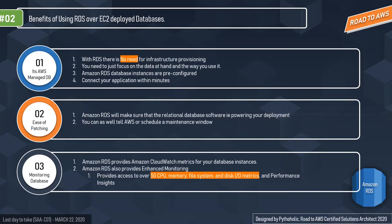The second benefit is ease of patching. Amazon RDS keeps your relational database software up to date with the latest patches, including OS patches. You can exert operational control over when your database instance is patched by scheduling a maintenance window. The third benefit is monitoring. Amazon RDS provides Amazon CloudWatch metrics for your database instances at no additional charge, so you can monitor events and logs. RDS also provides enhanced monitoring with access to over 50 CPU, memory, file system, and disk I/O metrics, plus Performance Insights to quickly detect performance problems — important for the exam.